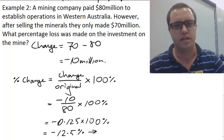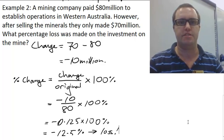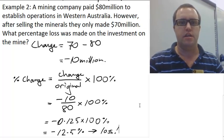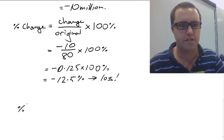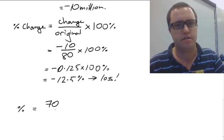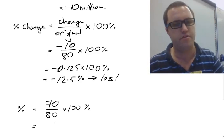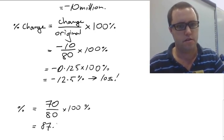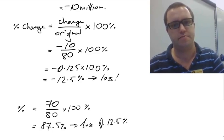And that obviously indicates a loss. Alternatively, you could go that the percentage will be 70 million dollars over 80 million dollars times 100%, which will be equal to 87.5%, which you can see is a loss of 12.5%.